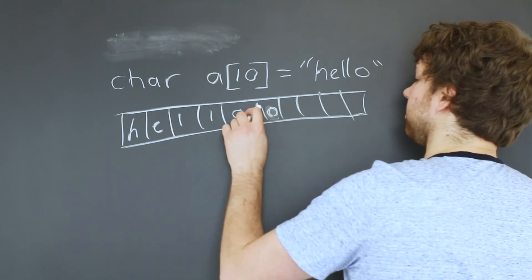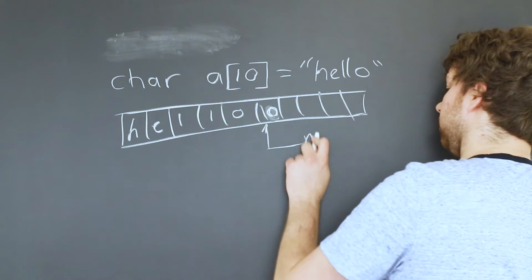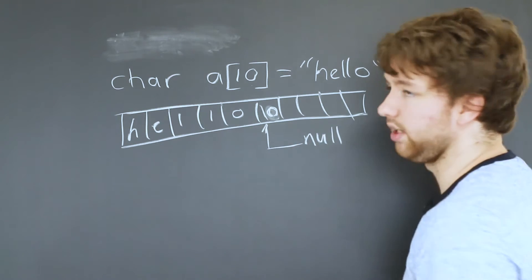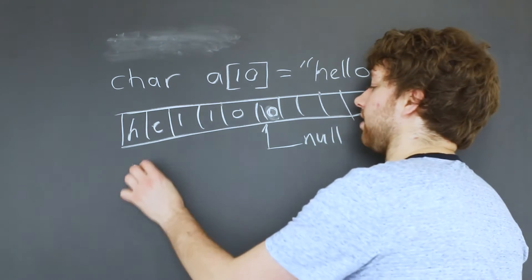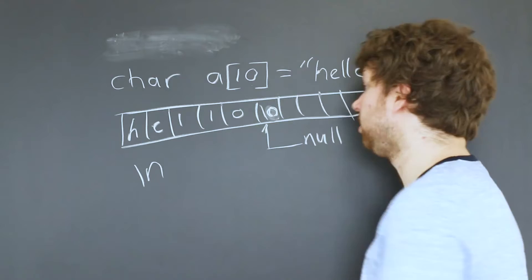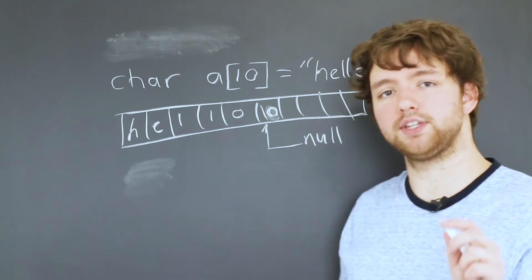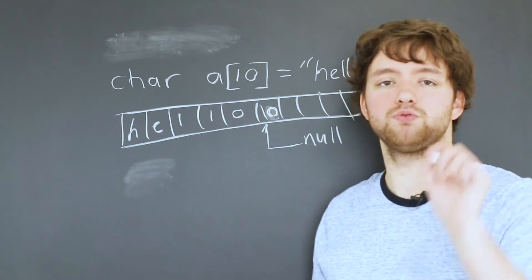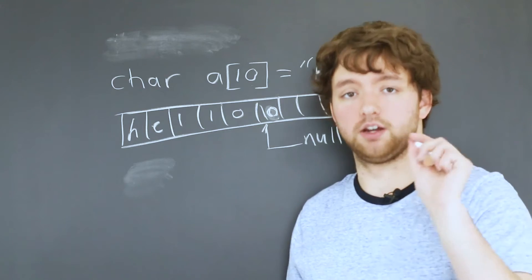And what that is, this is called the null character. And it's represented as a backslash zero, similar to how the backslash n represents a new line. Well, the backslash zero represents the null character. And what this is, is it's a character used to represent, or it's used to indicate the end of the string.